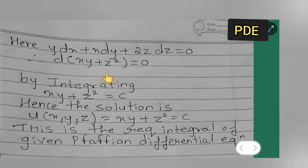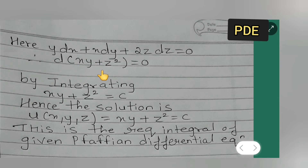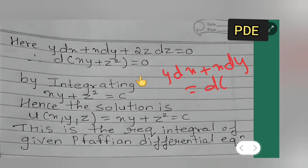Continuing from where we showed equation 1 is exact: y dx plus x dy plus 2z dz equals 0 can be rewritten as d(xy) plus d(z²) equals 0, since differentiating xy gives y dx plus x dy, and differentiating z² gives 2z dz.